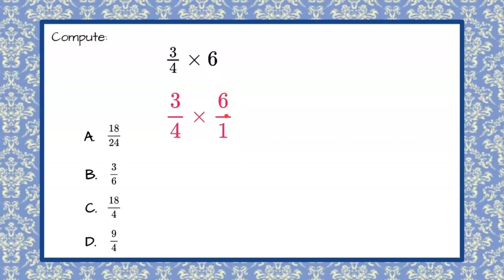Remember, a fraction bar represents a division symbol, so 6 divided by 1 is itself 6. But following the rules of multiplying fractions, you multiply the numerators, and then you multiply the denominators. Here, our denominator is an invisible 1.